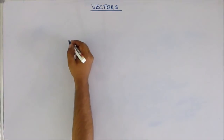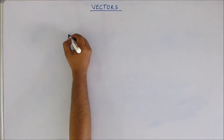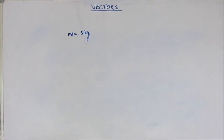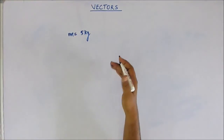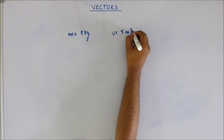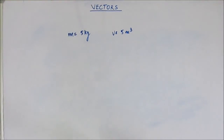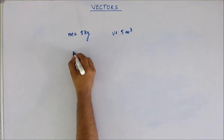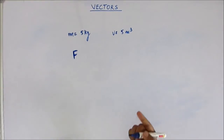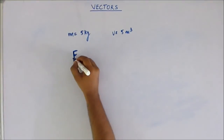Now let's talk about the representation of a vector. Generally when we talk about mass, we say mass m is equal to 5 kg. You must have solved numericals many times where you would have written m is equal to 5 kg, or volume is equal to 5 meter cube. Now these are scalar quantities. When we talk about force or any vector quantity, we use a bold letter.